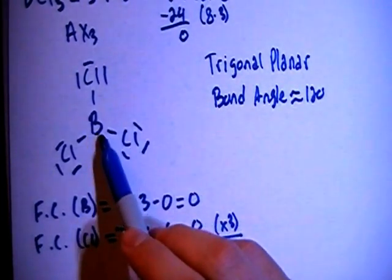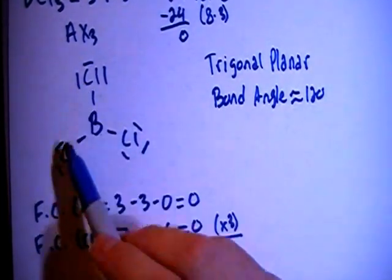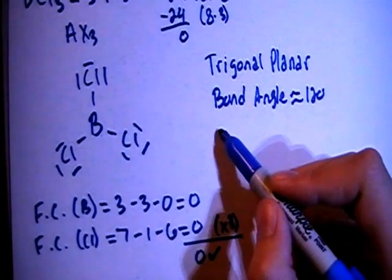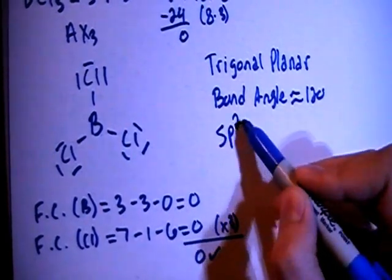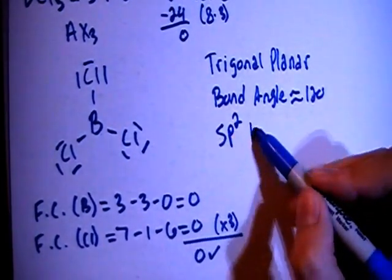If you look at the central atom, which is the boron in this case, there's one, two, three bonding sites, which means you're going to have sp2, so one s and two p's for the hybridization.